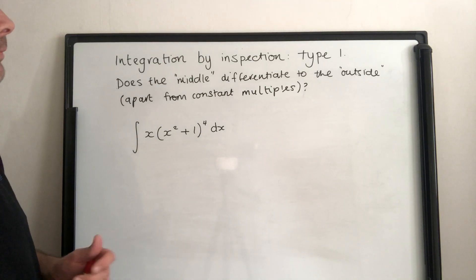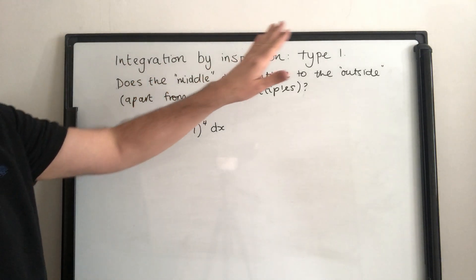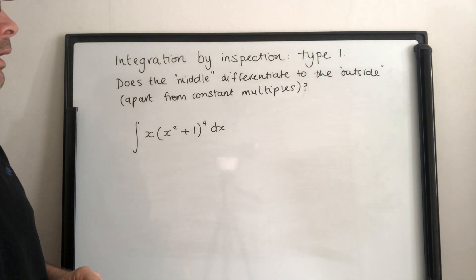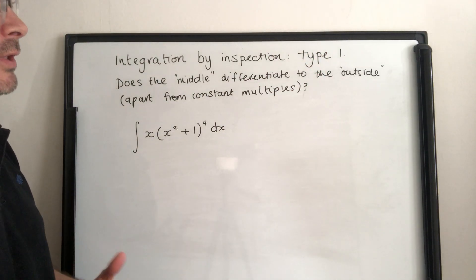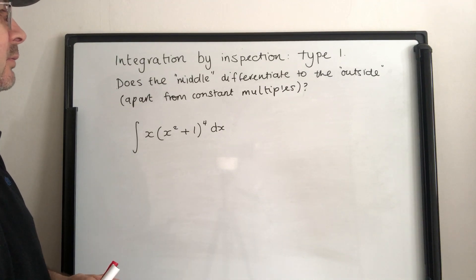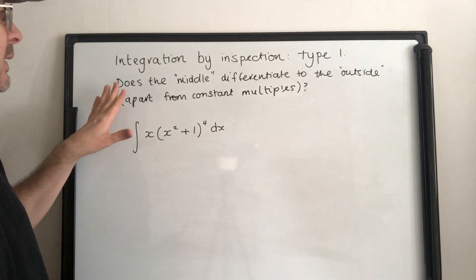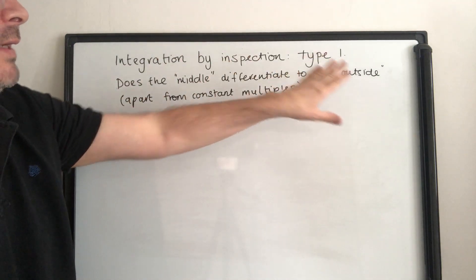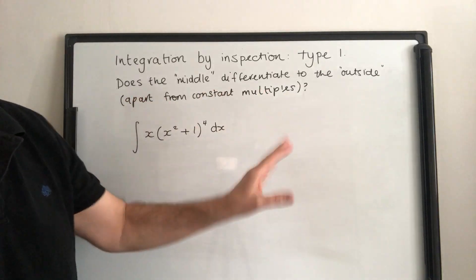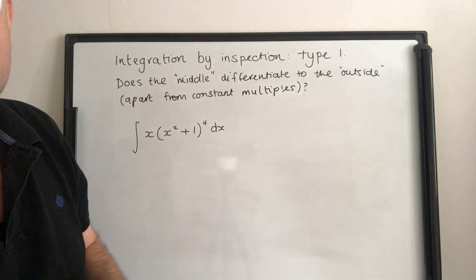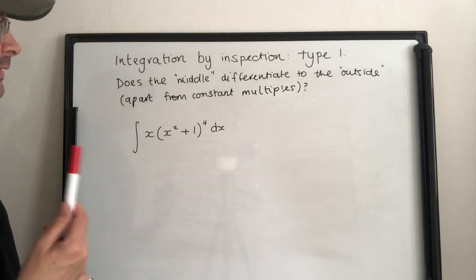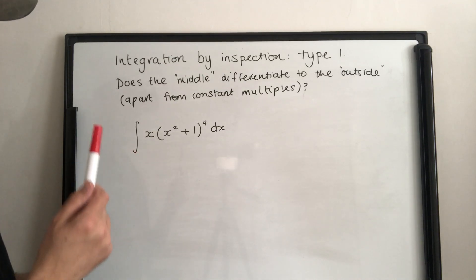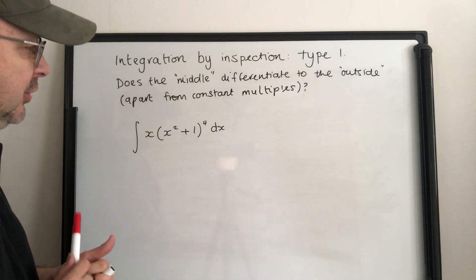In this tutorial I'm going to go through integration by inspection, type one. You'll see more about type two later and you'll see the two different types when I go through it. This method is also called the reverse chain rule.